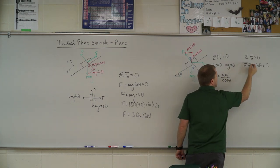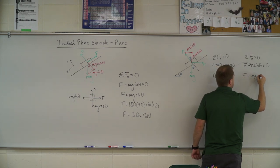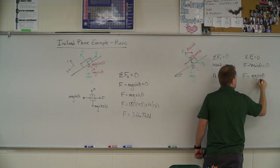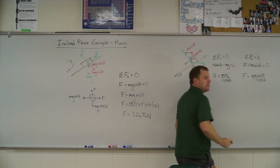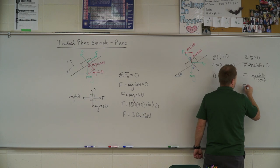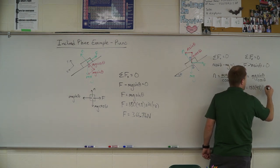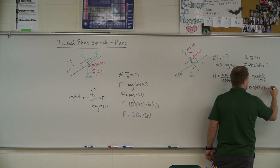Substitute that in. And so I get f is equal to mg times the sine of theta divided by the cosine of theta. And some of you might be thinking sine over cosine. Tangent. You got it right. So f is equal to 180 times 9.8 times the tangent of theta, which was 12 degrees.